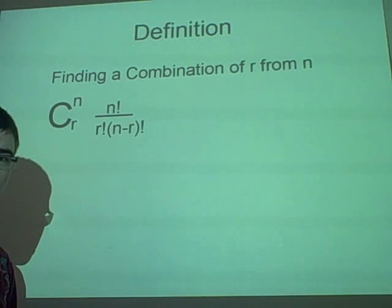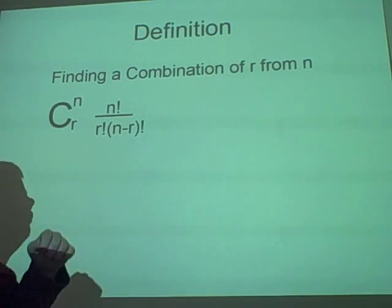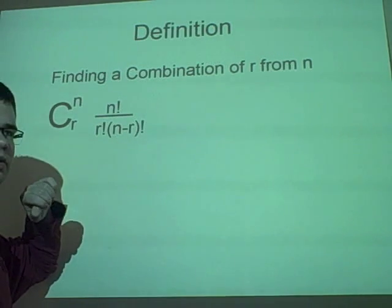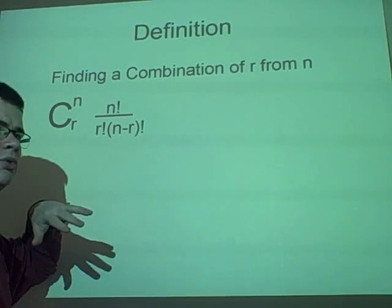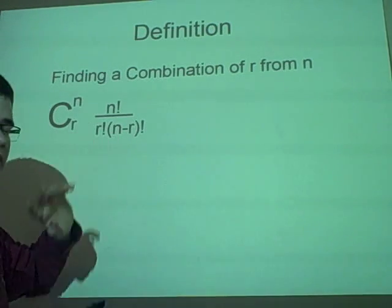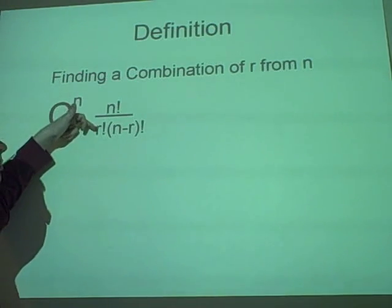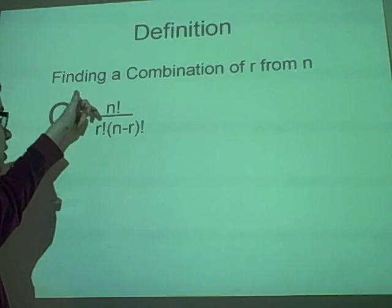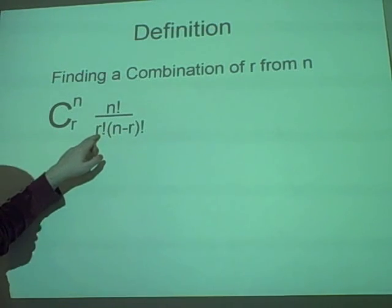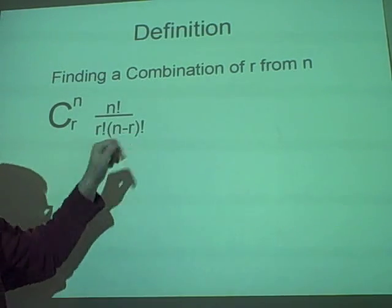Right. And this is the last one, combinations. So, if you want to find a combination of r numbers from a total of n numbers, then we use this. Now, this is just the same as the picking one, except we've multiplied the bottom by r factorial. So, we have n factorial over r factorial times n minus r factorial.